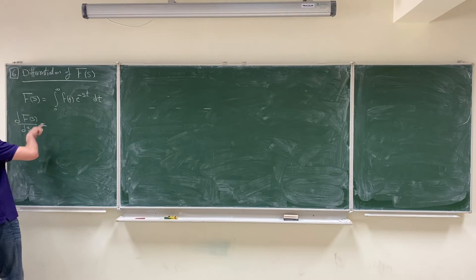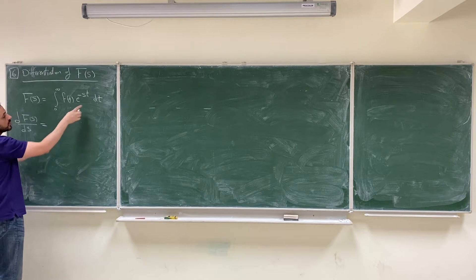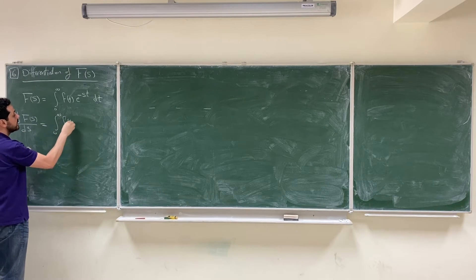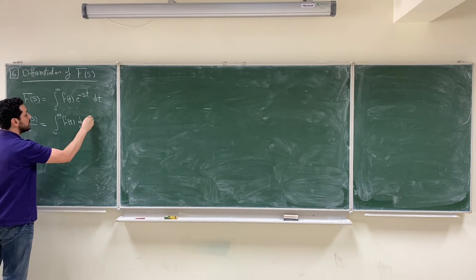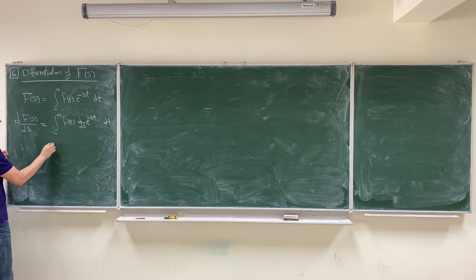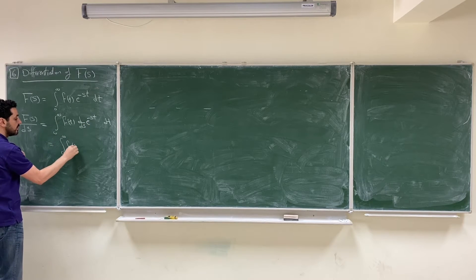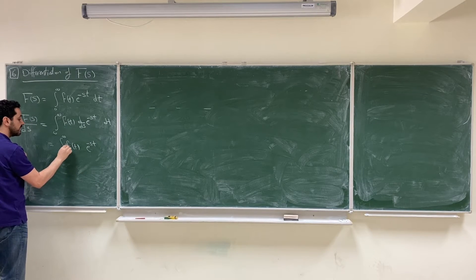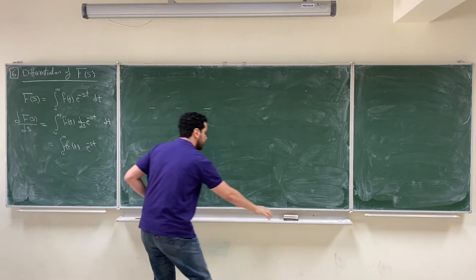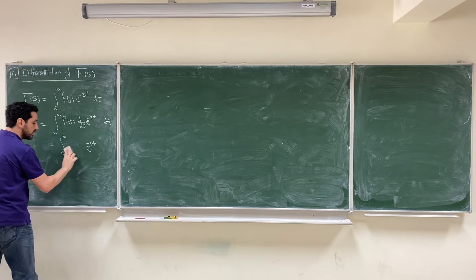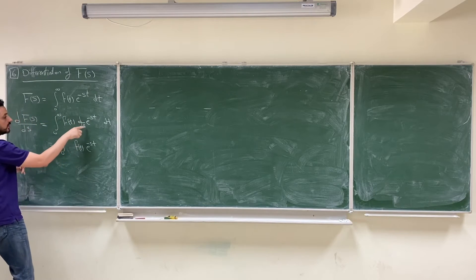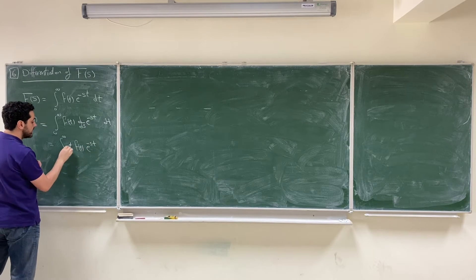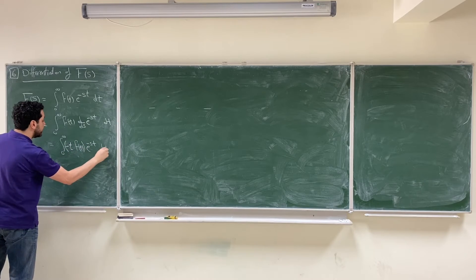If we differentiate with respect to s, we can bring the differentiation inside the integral because the integration is with respect to t and we are differentiating with respect to s. When we differentiate e^(-st), we get the same exponential multiplied by -t, so inside the integral we get f(t) times e^(-st) times (-t) dt.